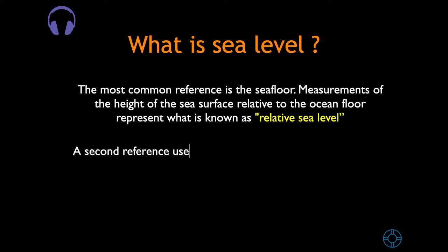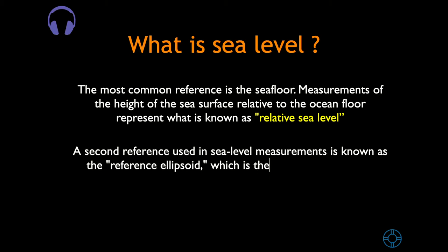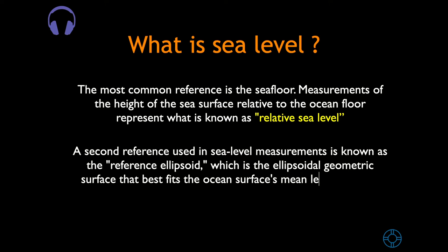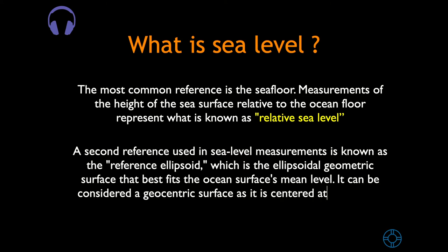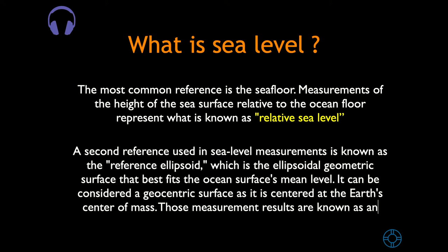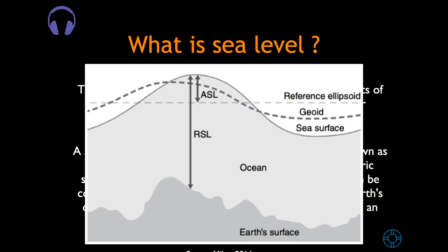A second reference used in sea level measurements is known as the reference ellipsoid, which is the ellipsoidal geometric surface that best fits the ocean surface mean sea level. It can be considered a geocentric surface as it is centered at the Earth's center of mass. Those measurement results are known as absolute sea level. This is a schematic diagram depicting the relative sea level, RSL, defined as the height between the sea surface and the sea floor.